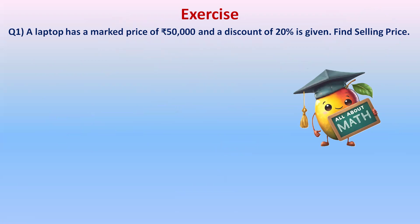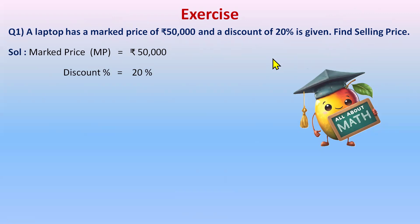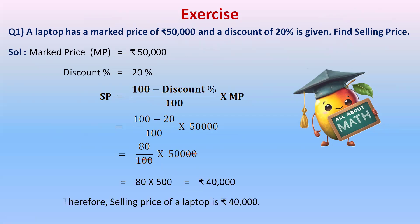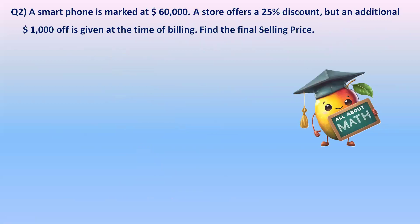Question 1: A laptop has a mark price of 50,000 rupees and a discount of 20% is given. Find the selling price. Using the formula: (100 − 20) / 100 × 50,000 = 80/100 × 50,000. Canceling zeros, we get 80 × 500 = 40,000 rupees. Therefore, the selling price of the laptop is 40,000 rupees.